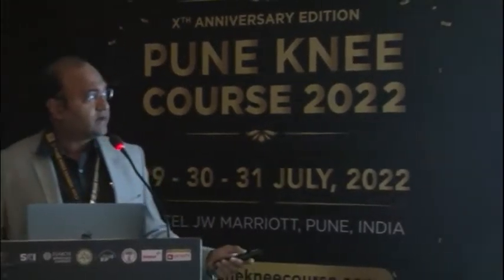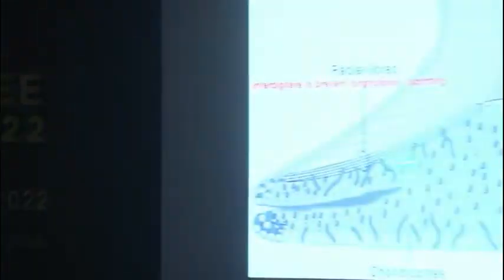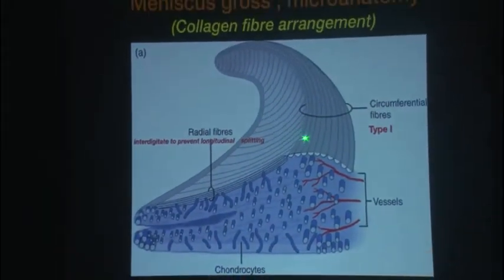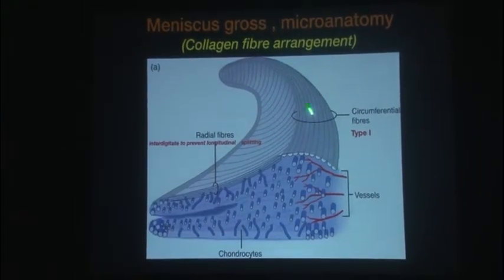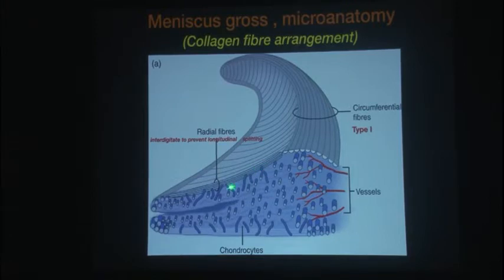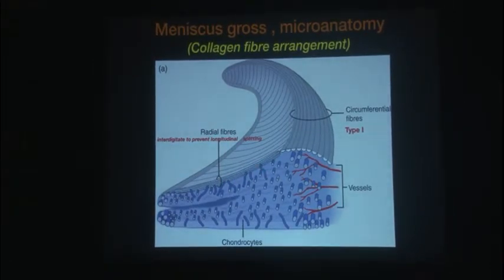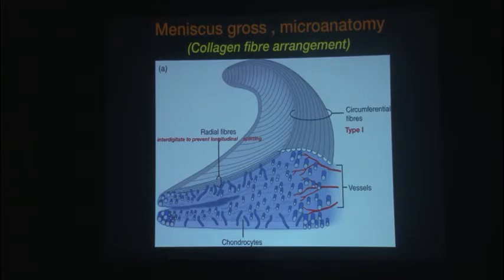This slide covers fiber orientation in the meniscus. Circumferential fibers are oriented along the axis and radial fibers are like bridges holding the circumferential fibers together. The first principle in biology is to use this to your advantage — create a strong vertical mattress construct such that biology gets a good scaffold to heal. If biomechanics is weak, biology will not be able to surpass it. You can create a good healing environment even for tears along the radial fibers.